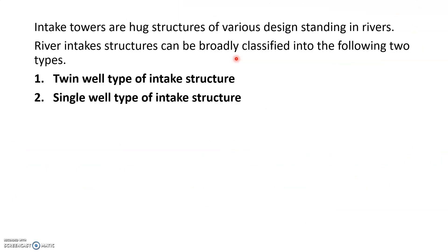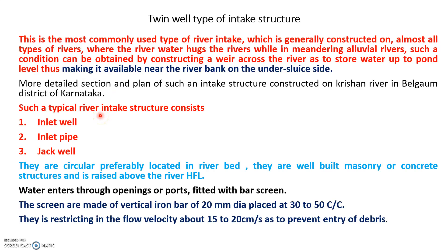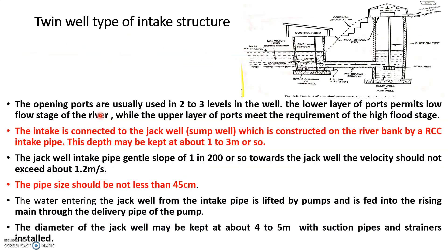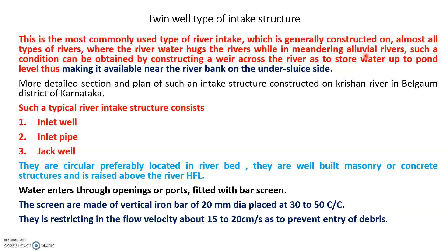River intake structures can be divided into two types: twin tower intake (also called twin well type) or single well type. In the twin well type, two wells are constructed; in the single well type there is only one well. Twin tower wells are used especially in Karnataka, on the Aluel River in the Krishna River basin, particularly in Belgaum district. You can see them on the Durganga and Bais Ganga rivers when traveling from Nipani to Kolhapur, and also near Hidkal Dam. The typical structure consists of an intake well, an intake pipe, and a jack well. It may be built of concrete or masonry, and the structure rises above the high flood level (HFL).